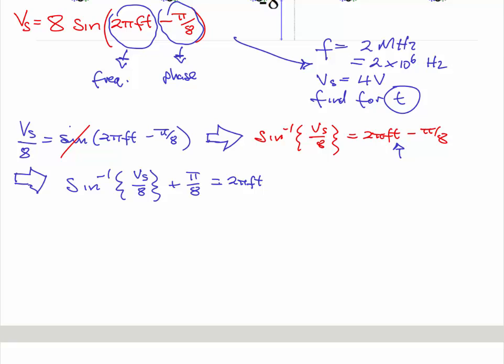If you divide both sides by 2πf, that thing there is going to go under. We should have t = [sin^(-1)(Vs/8) + π/8] / (2πf).